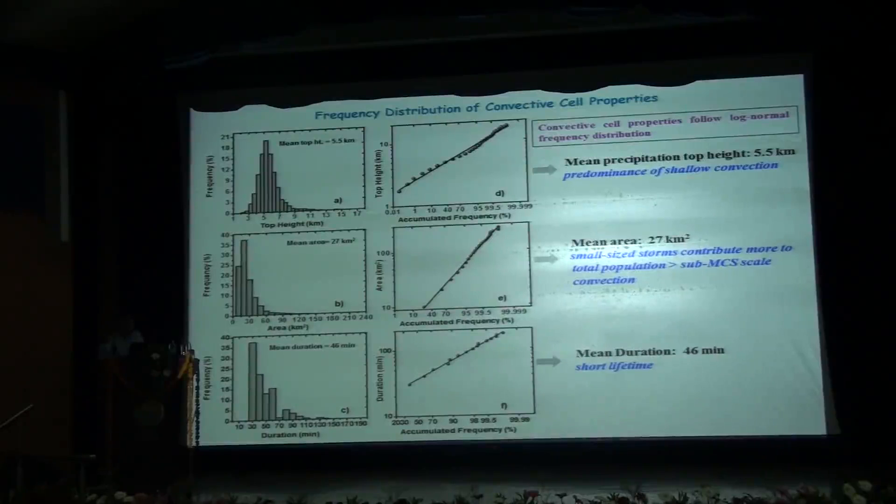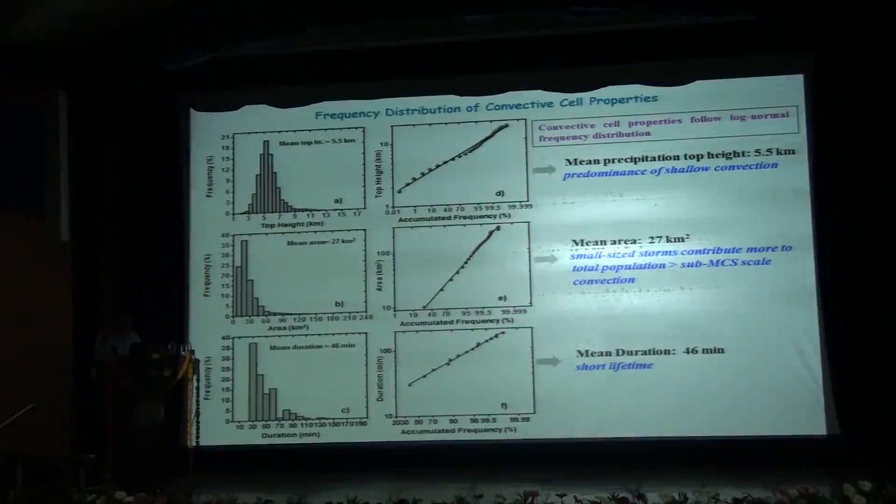The mean storm area is around 27 square km. It is the projection of the storm onto the lowest partition grid of the system. The small-sized storms dominate the region and the total population of the convective system which shows sub-MCS scale nature of the convection. The duration for which the storm lasts was around 46 minutes which shows shorter lifetime, probably due to more splitting and merging phenomena that occurs in storms which determines the lifetime of a storm. So in this region we presume that the splitting phenomena is more which limits the lifetime of the storms to lower values.